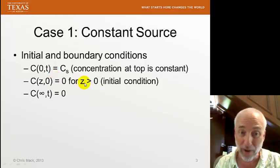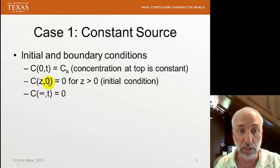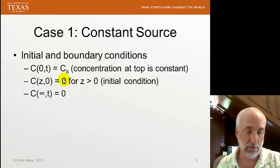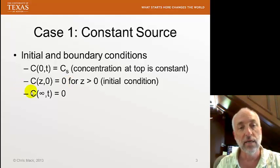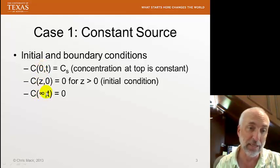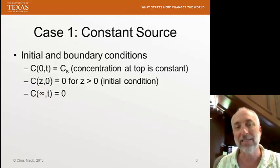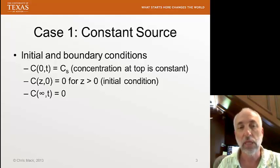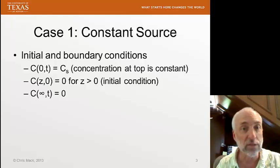Our initial condition is that everywhere except at the top — for all z's except zero — at t equals zero, the beginning of our diffusion cycle, we have no dopant. So we pile up a bunch of dopant on the top of the wafer, and inside the wafer there is no dopant. The last boundary condition is at z equals infinity: we simply say at an infinite distance down into the wafer, you're not going to find any dopant for all time. Given those two boundary conditions and one initial condition, we can solve the diffusion equation in one dimension.